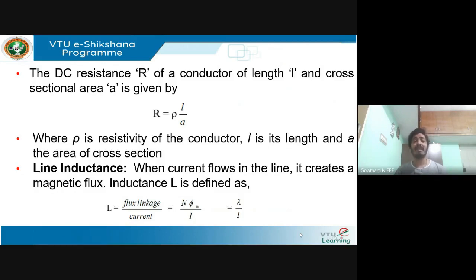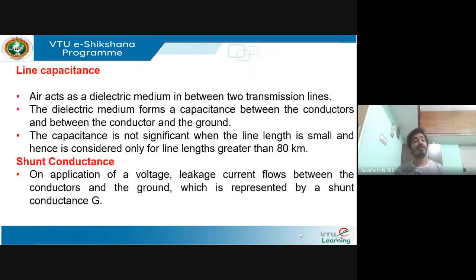Moving on to line inductance: this arises because when current starts flowing through the line, it creates a magnetic field — a magnetic flux. This flux gives rise to line inductance. The expression for inductance is nothing but flux linkage divided by current. Flux linkage is nothing but number of turns N into the flux of the line — N·φm divided by the current. So λ/I, where λ is flux linkage, which is number of turns into maximum flux φm. These are what led to the development of resistance and inductance in the line.